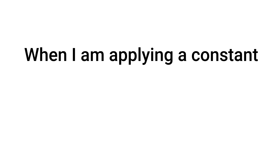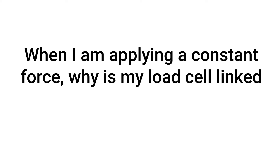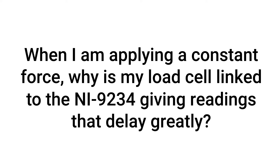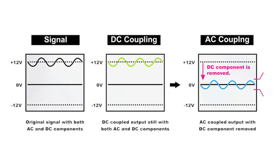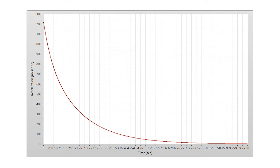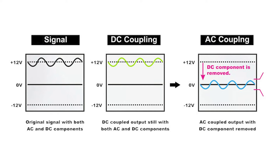When applying a constant force, why is my load cell linked to the NI9234 giving readings that delay greatly? This may be happening because numerous load cells and external power supplies have AC coupling circuitry, which is meant to discard DC noise from the external power supply. Sometimes this can cause the signal to decay exponentially. The choices are to either use sensors without AC coupling circuitry, or if external excitation is required, pick a power supply without AC coupling circuitry.